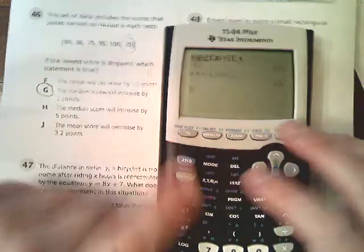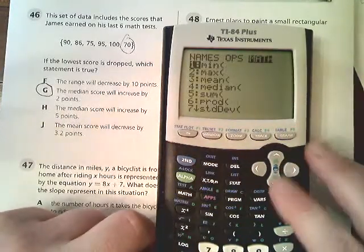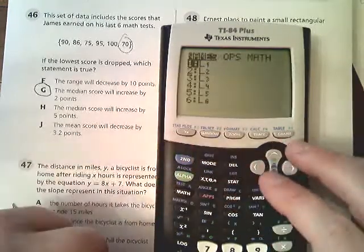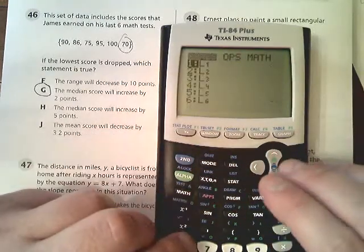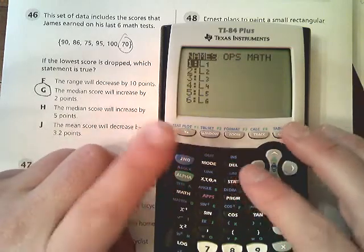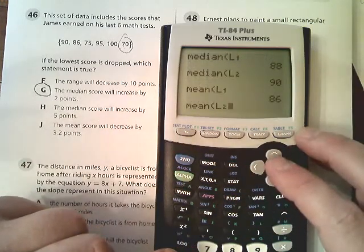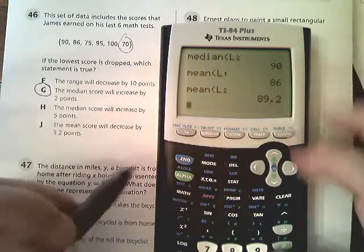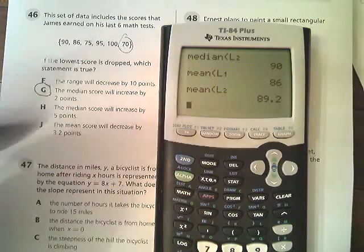If you wanted to check the mean value, you'd go into math, you'd go down to mean, and you'd do it again and pick L1. I'm just hitting second list and picking the list I want. And see, it goes up by about 3.2.